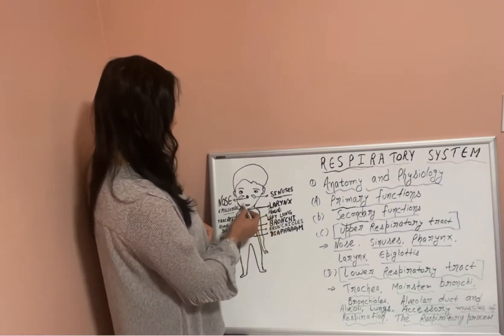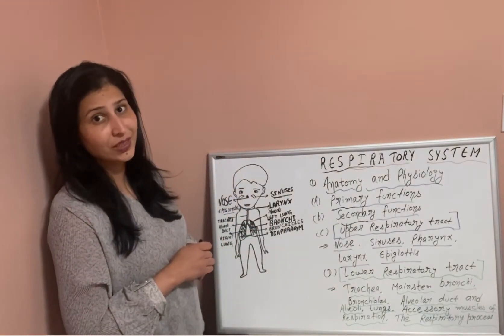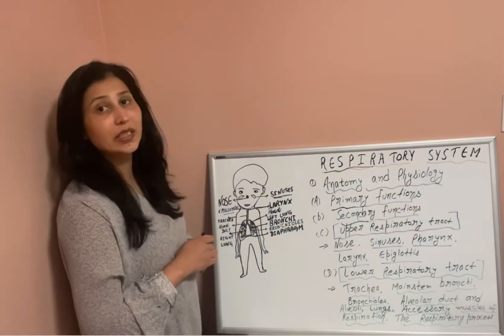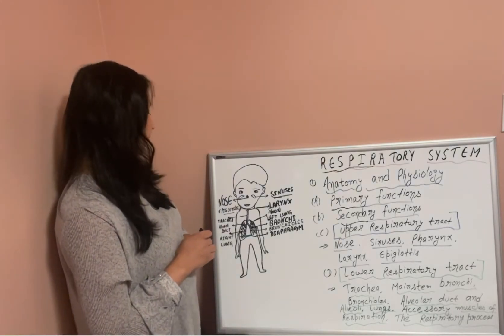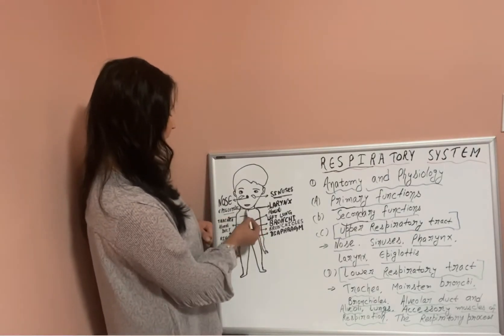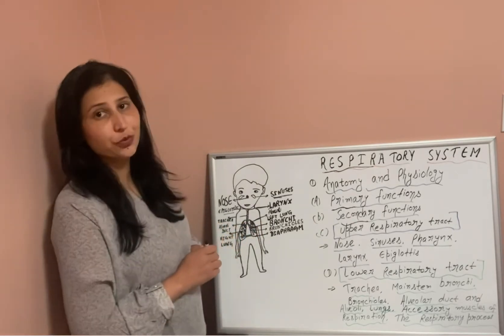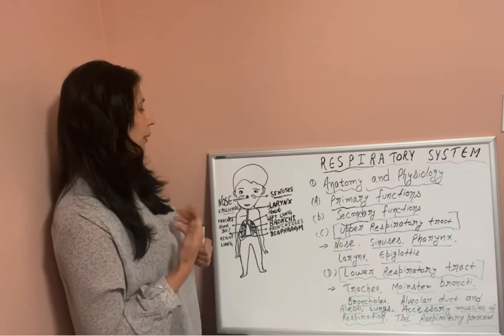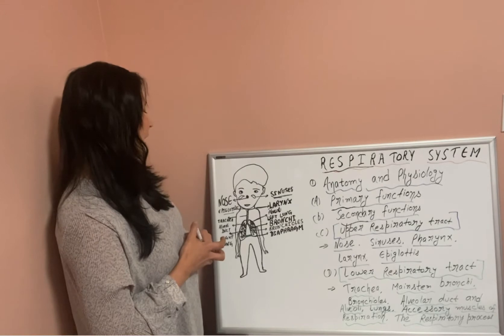The pharynx is just behind the nose and oral cavities and is divided into the nasopharynx, laryngopharynx, and oropharynx. After the pharynx, there is the larynx — also called the voice box — which helps in producing the voice.